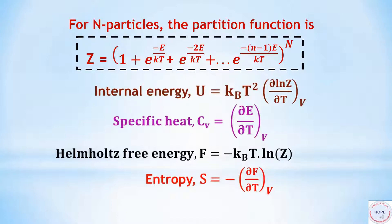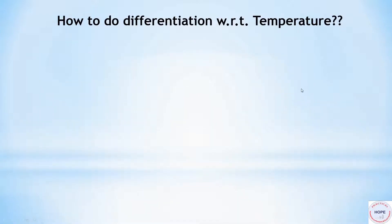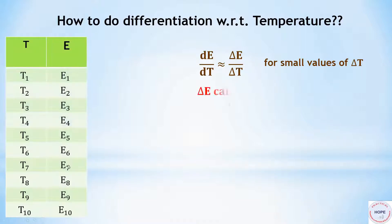Finally, how to do differentiation with respect to temperature? Since we need it to evaluate the thermodynamic variables. Now dE by dT is approximately equal to delta E by delta T for small values of delta T. Delta E can be calculated in Scilab using the diff function.